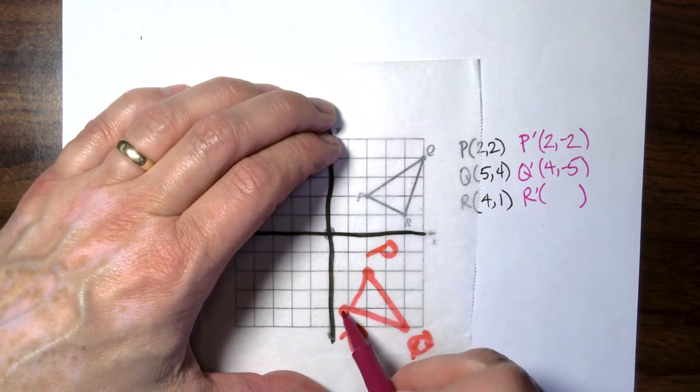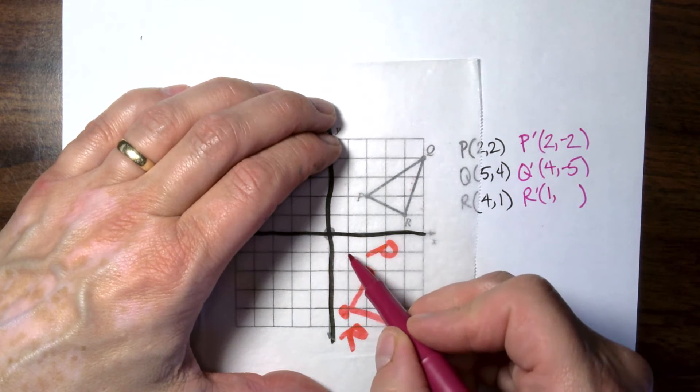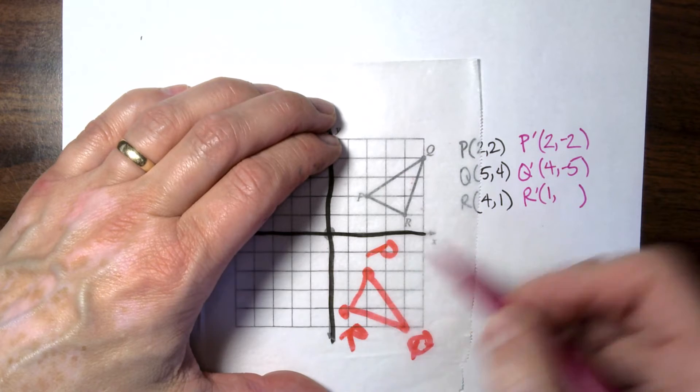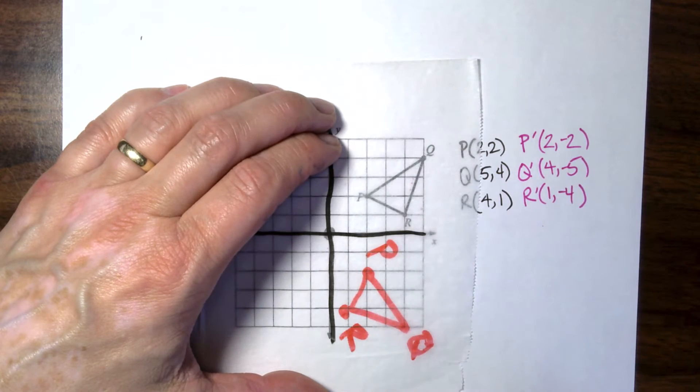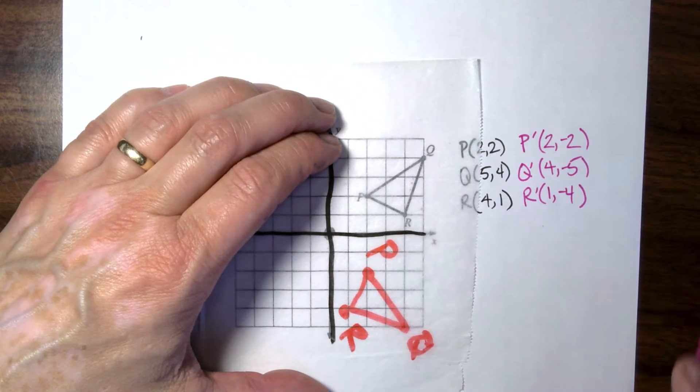And R, right here, is at x equals 1, and y equals negative 4.